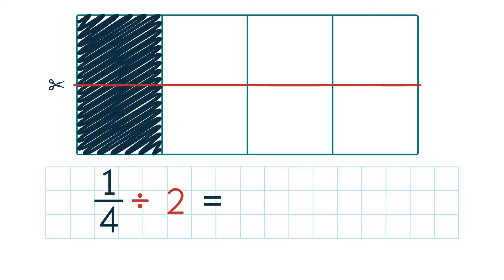Our shaded part, 1 4th, gets divided into two equal parts. And one of these parts is our final answer, because 1 4th is divided by 2.